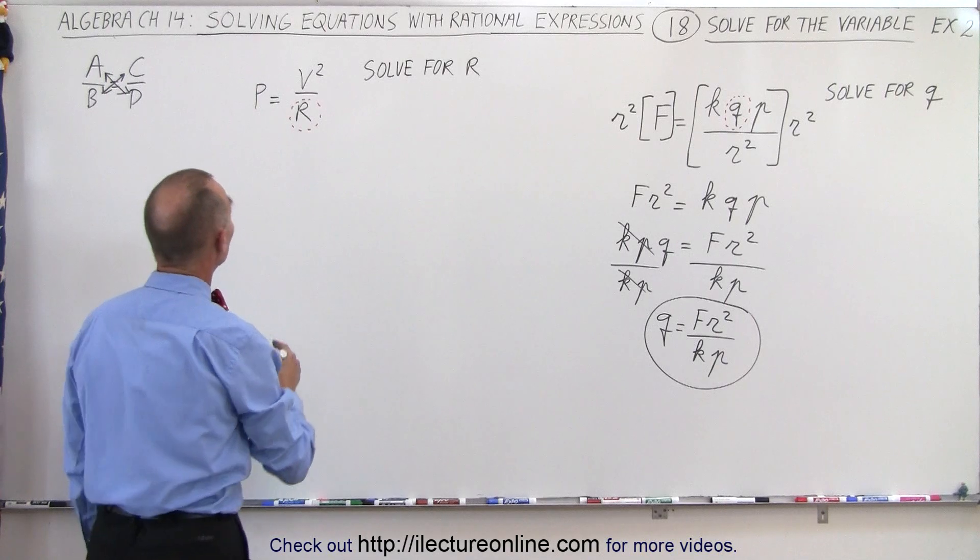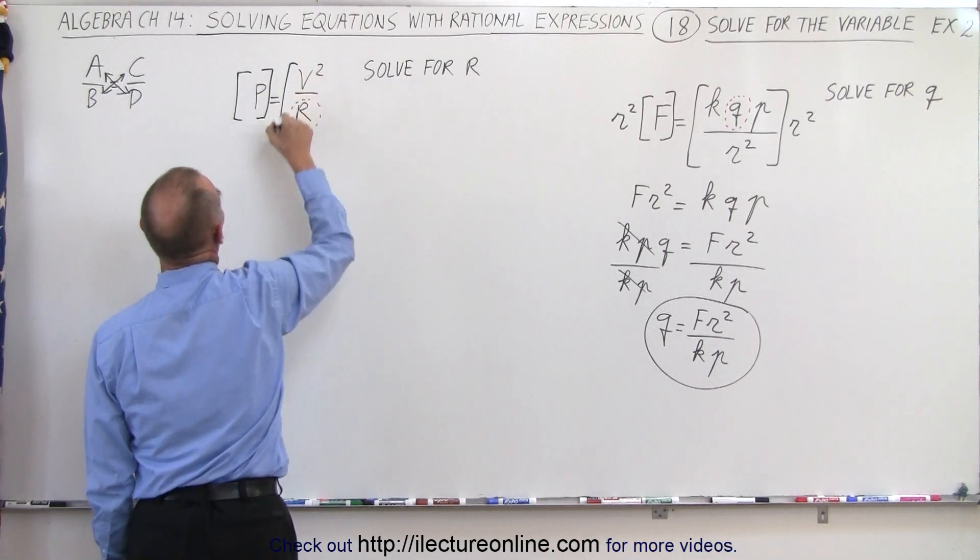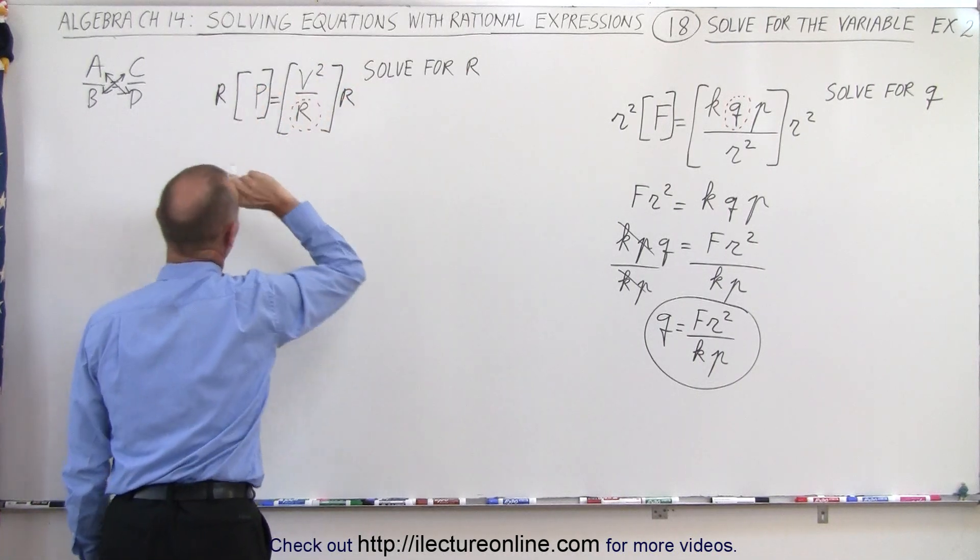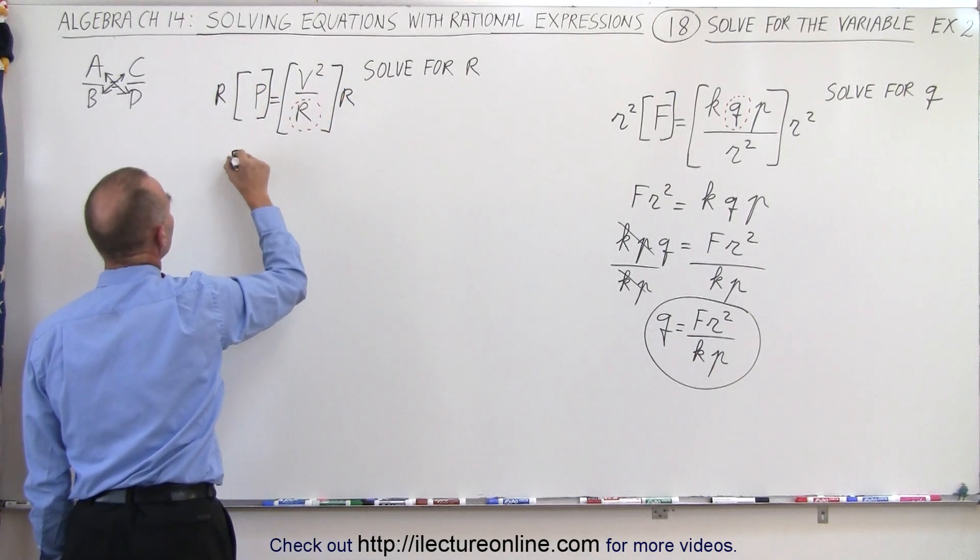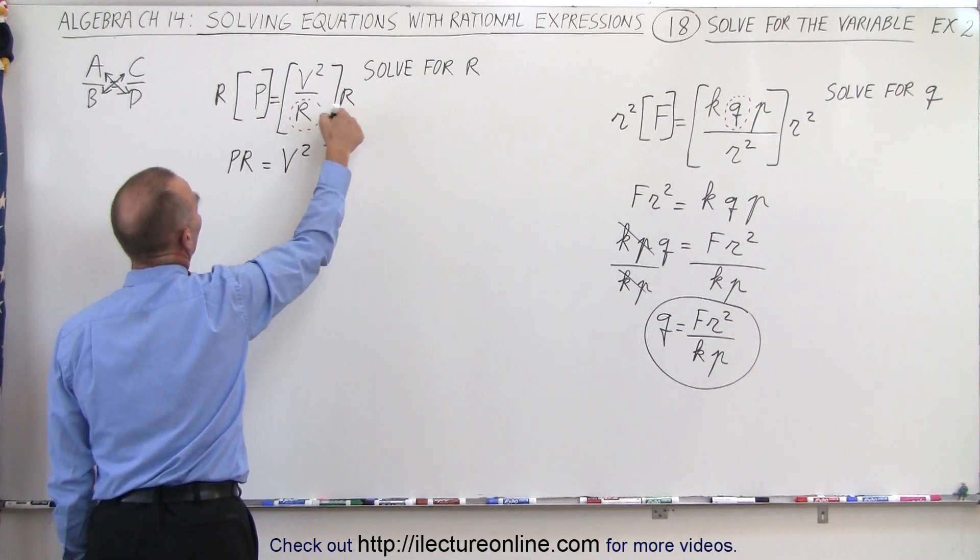Over here, we can do the same thing. We're going to multiply both sides of the equation by the lowest common denominator, which in this case is r. So here what we end up with is p times r equals v squared, because here the r's cancel out.